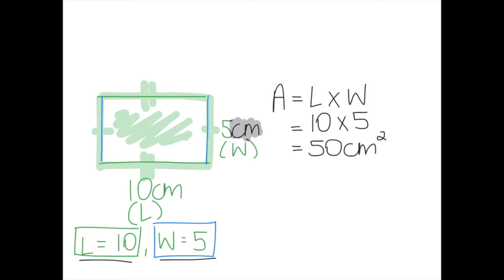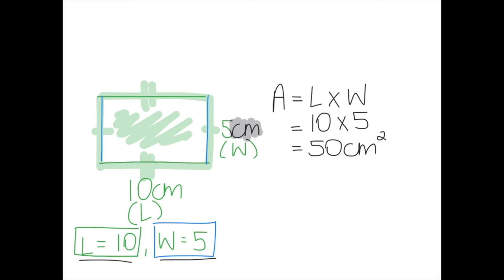It's going to be the exact same if the rectangle is positioned differently. So if I had a rectangle that was facing this way, it doesn't matter which has one hash mark and which has two, as long as they are opposite.